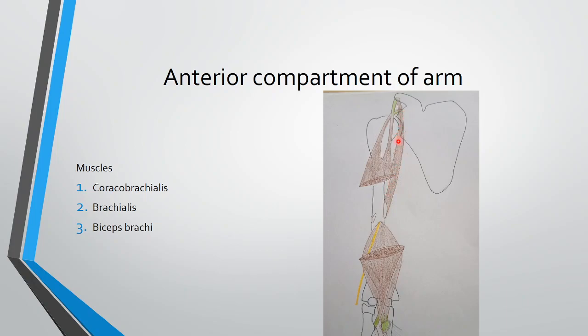Coracobrachialis is comparable with the medial compartment of the thigh, like the adductor compartment, but here in the upper limb there is no separate adductor compartment, so this muscle is somewhat like an adductor. Brachialis is the deep muscle on the surface of the lower part of the shaft of the humerus. It takes origin anterolaterally and anteromedially from the shaft of the humerus and is inserted into the ulnar tuberosity and the rough anterior surface of the coronoid process of the ulnar bone. It is one of the best flexors of the elbow.